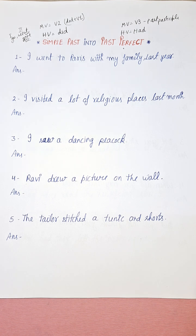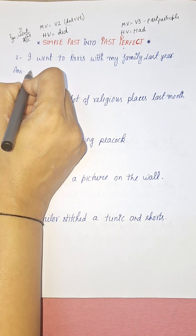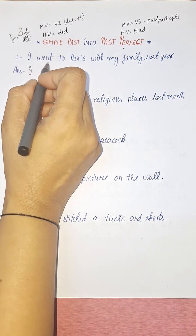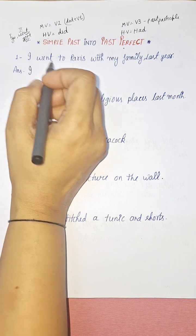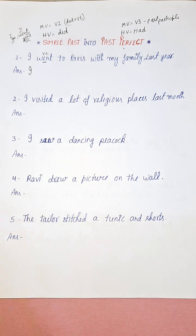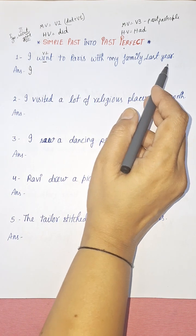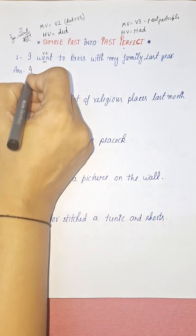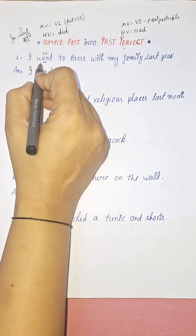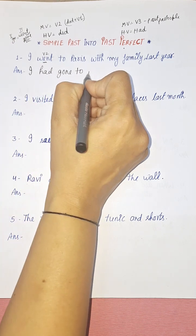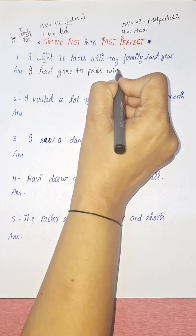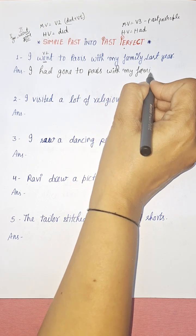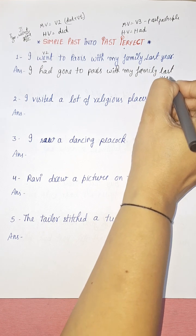Now let's convert a sentence. 'I went to Paris with my family last year.' Here, 'went' is the second form of the verb, which identifies it as simple past tense. To convert to past perfect, we use had plus the third form: 'I had gone to Paris with my family last year.' In this way you can convert simple past into past perfect.